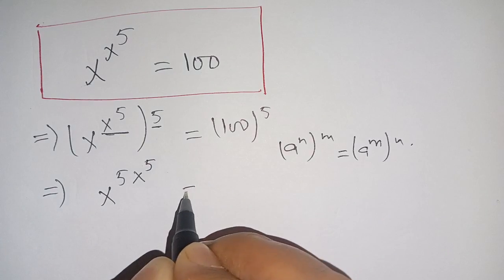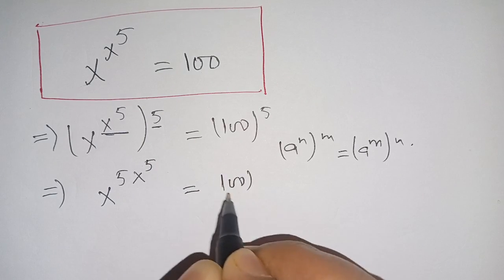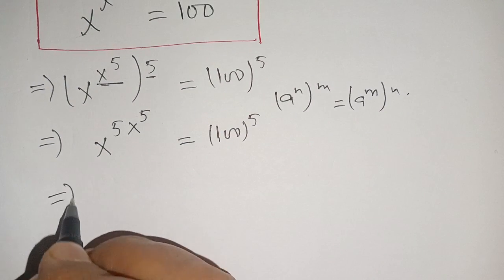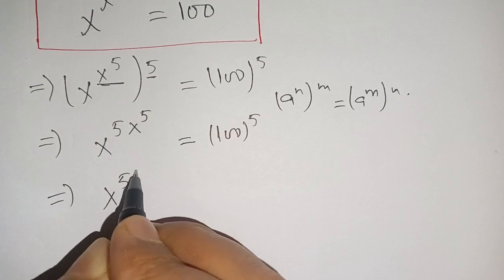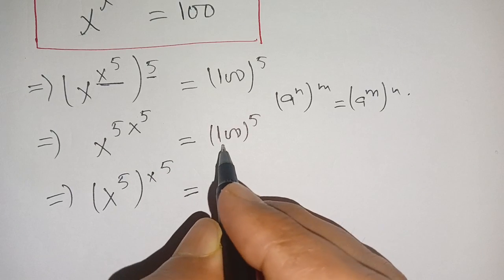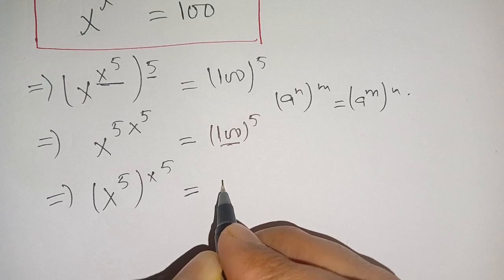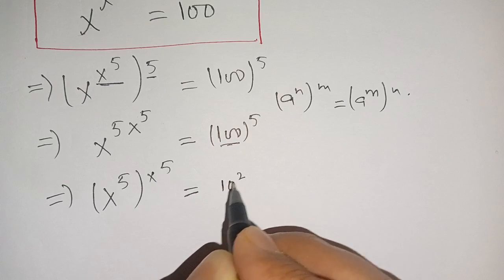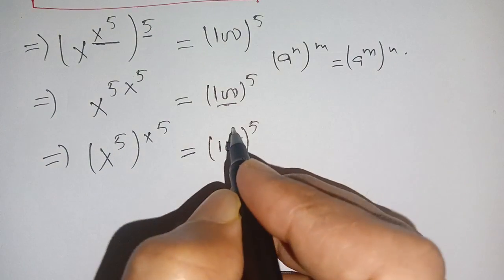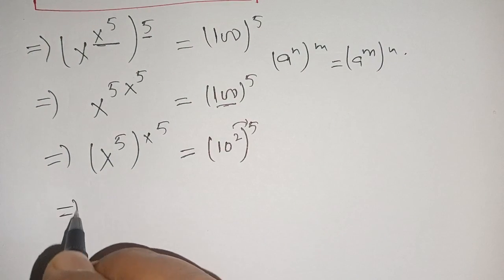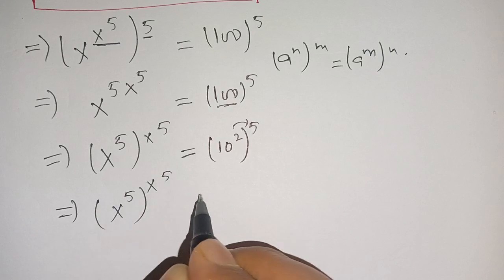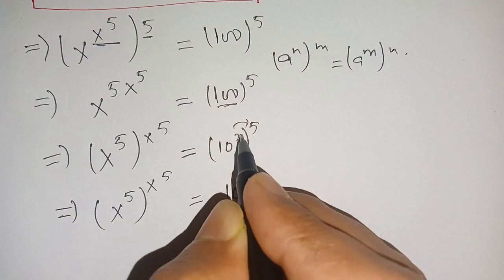We can write this as (x^5)^(x^5) equals 100^5. Now 100 can be written as 10^2, so the right-hand side becomes (10^2)^5. Multiplying the powers, we get (x^5)^(x^5) is equal to 10^(2×5), which is 10^10.